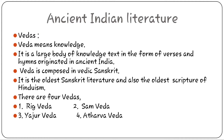Our next topic is Ancient Indian literature, page number 30 of your textbook. Veda — what do you mean by Veda? Vedas means knowledge. How many Vedas are there? There are four Vedas: Rig Veda, Sam Veda, Yajur Veda and Atharva Veda. Vedas are written in Vedic Sanskrit. This is the oldest Sanskrit literature and also the oldest scripture of Hindu religion.